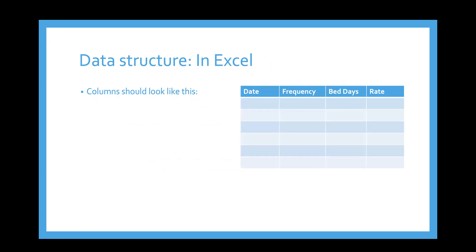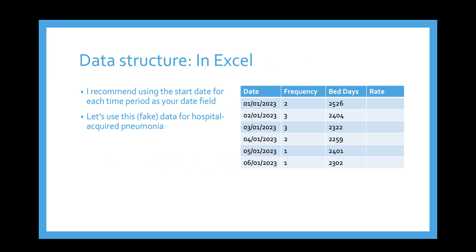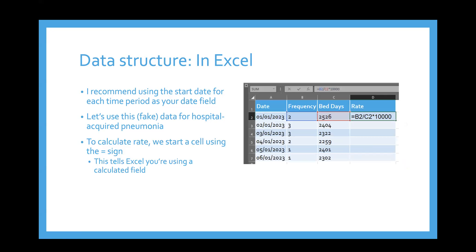When structuring our data in Excel, our columns should look like this if we're looking at a rate. We can fill in our dates — here we have monthly data, and I suggest using the start date of each time period so your x-axis labels show the start of each period. Using fake data based on hospital-acquired pneumonia: let's say a fairly large hospital with roughly 2,500 bed days per month, and then the number of hospital-acquired pneumonias per month.